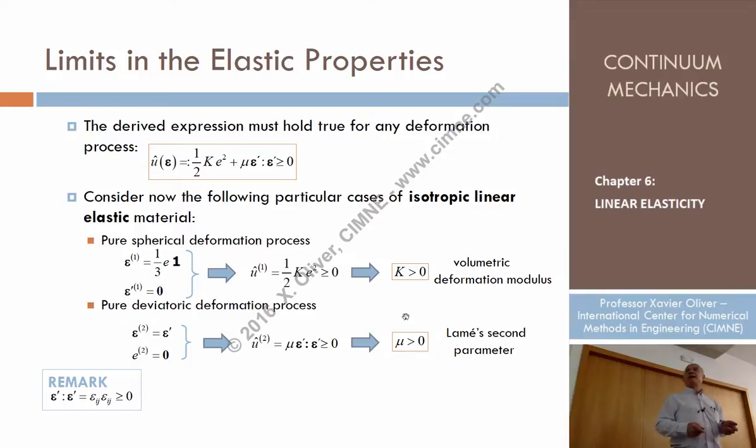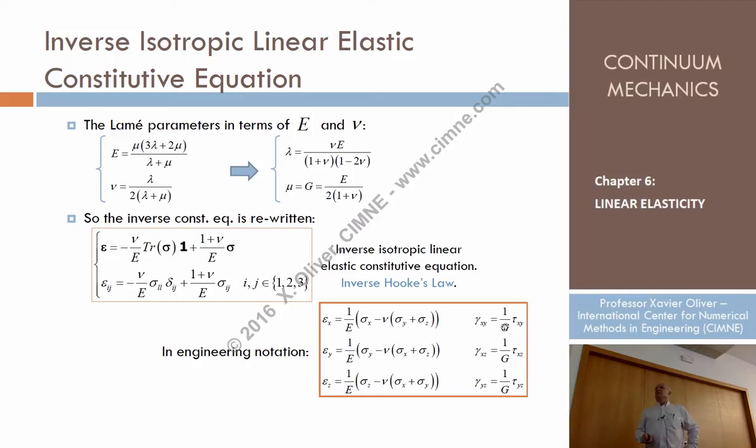We find that not only the volumetric modulus has to be positive, but also the shear modulus, mu or G, have to be greater than zero. What is this parameter mu? Let's go back a little bit and find tau xy equals G times gamma xy. G and mu is the same.